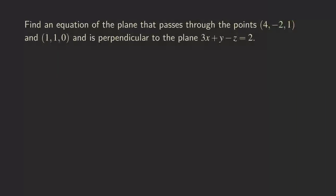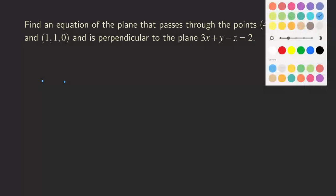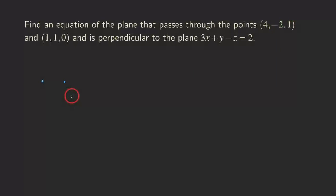First, we are going to place the two points. So just put the two points there. Now what happens is that we are going to draw the plane that we are trying to determine, and that plane must be passing through those two points. So we make the plane that's passing through those two points — this is the plane that we're trying to determine.